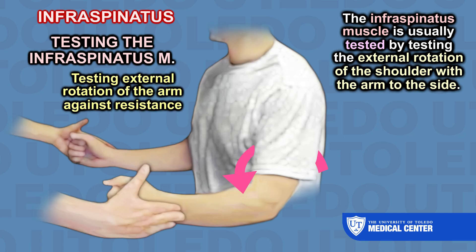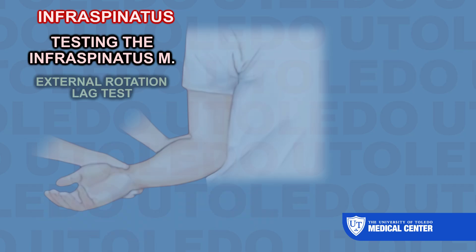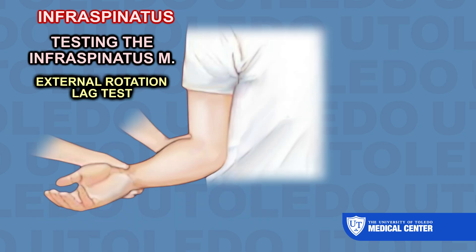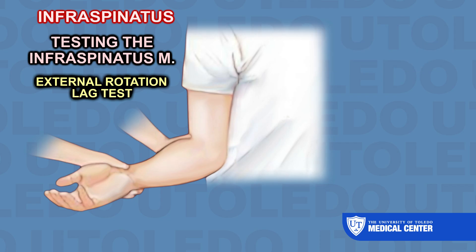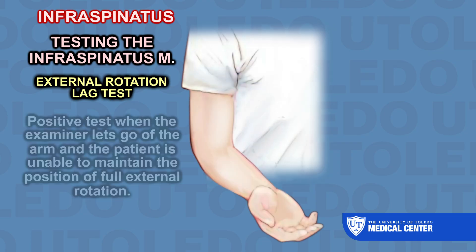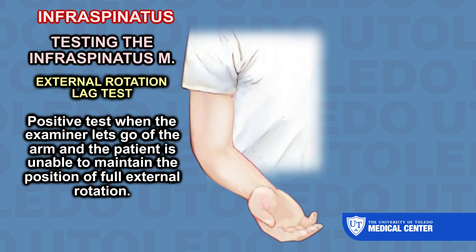Here is an example of testing external rotation of the arm against resistance. Another example is the external rotation lag test: the examiner passively rotates the arm into full external rotation. There will be a positive test when the examiner lets go of the arm and the patient is unable to maintain the position of full external rotation.